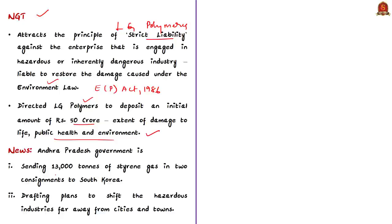If you look at today's newspaper, it reports that the Andhra Pradesh government has begun the process of transporting about 13,000 tons of styrene gas in two consignments to South Korea, since the company is a South Korean-based company. Therefore, in the light of this incident, to avert such incidents in future, the government is also drafting rules to shift hazardous industries to safer places far away from cities and towns.